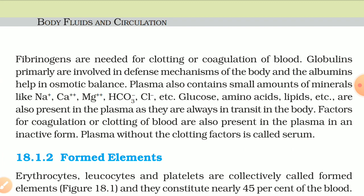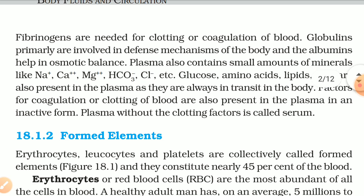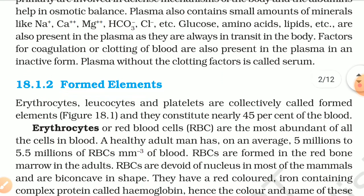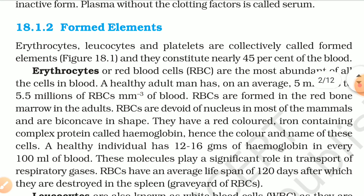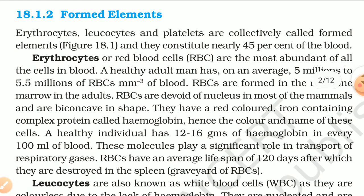18.1.2 Formed Elements. Erythrocytes, leukocytes, and platelets are collectively called formed elements, and they constitute nearly 45% of the blood. Erythrocytes or red blood cells are the most abundant of all the cells in the body. A healthy adult man has on an average 5 million to 5.5 million RBCs per cubic millimetre of blood.